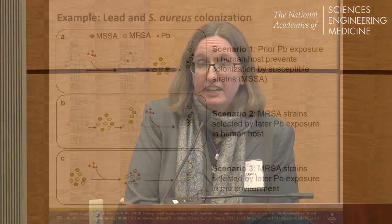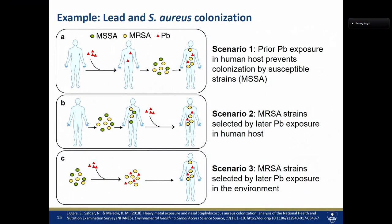Staph aureus has also been associated in human hosts with lead biomarkers. Another research group looked at NHANES — a large nationally representative surveillance dataset of people in the United States that is population weighted and can be used to generalize to the entire U.S. population. They found that biomarkers of blood lead were associated with greater detection of MRSA and lower detection of methicillin-susceptible Staph aureus — more of the resistant form and less of the susceptible form. They postulated three scenarios, and prior lead exposure may mean that lead in the body — circulating in blood or stored in bone — may prevent colonization by susceptible strains.